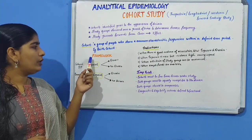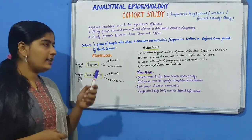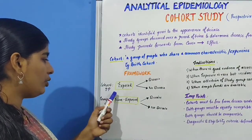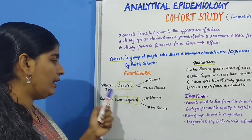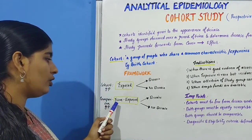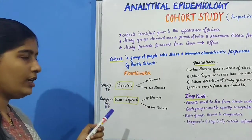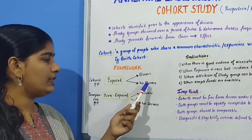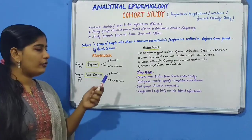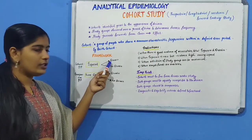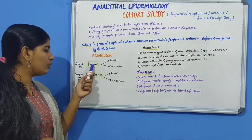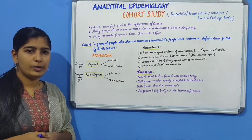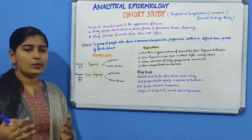Moving on to the framework or the design of a cohort study, it is exactly opposite to what we studied in case control study. We start from exposed and non-exposed groups of people — exposed forms the cohort and non-exposed forms the comparison group. We then study them through follow-ups to see whether they develop the disease or not. If there is a higher incidence of disease in the exposed group than in the non-exposed group, we can say that an association exists between the exposure and the outcome.